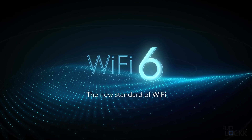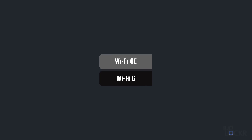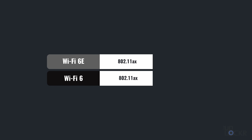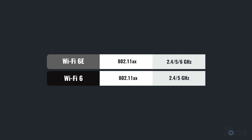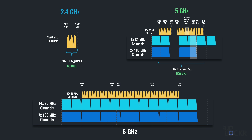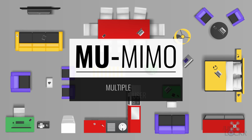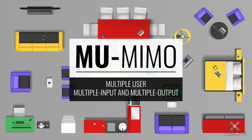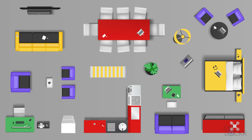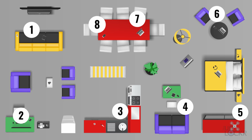A quick recap of some of the more important features in Wi-Fi 6 and Wi-Fi 6E, as they're here in Wi-Fi 7 but have been improved upon. First, we have MU-MIMO, which stands for Multiple User, Multiple Input, Multiple Output, and allows multiple clients on the network to send and receive data at the same time, up to eight at once in Wi-Fi 6.